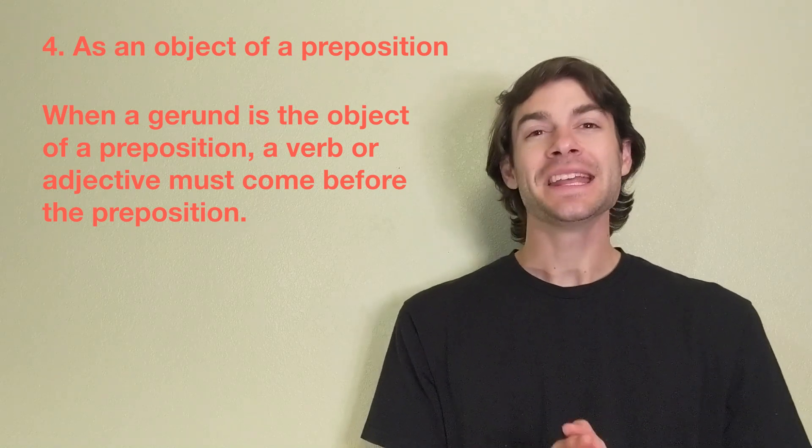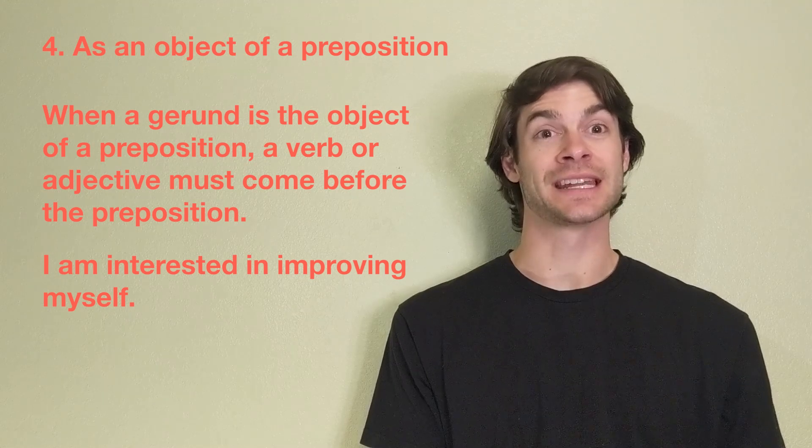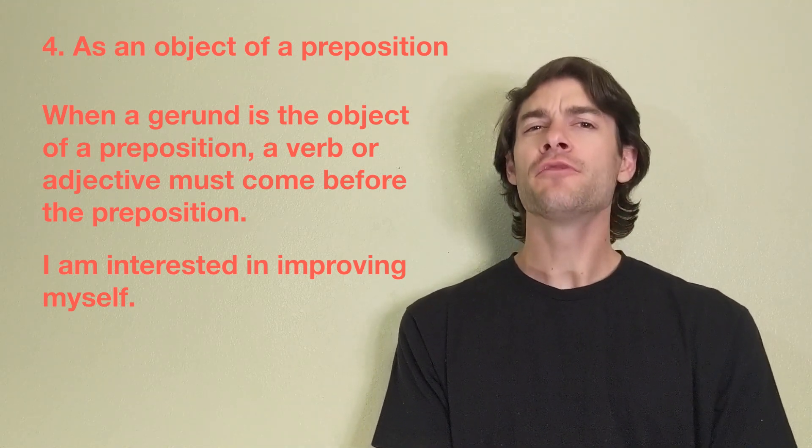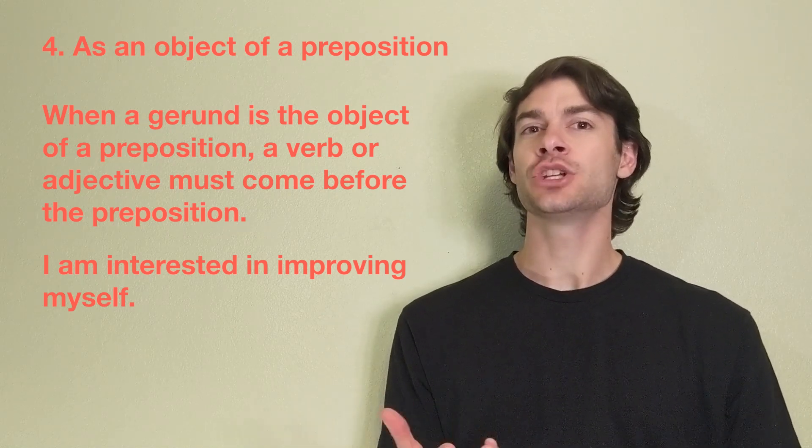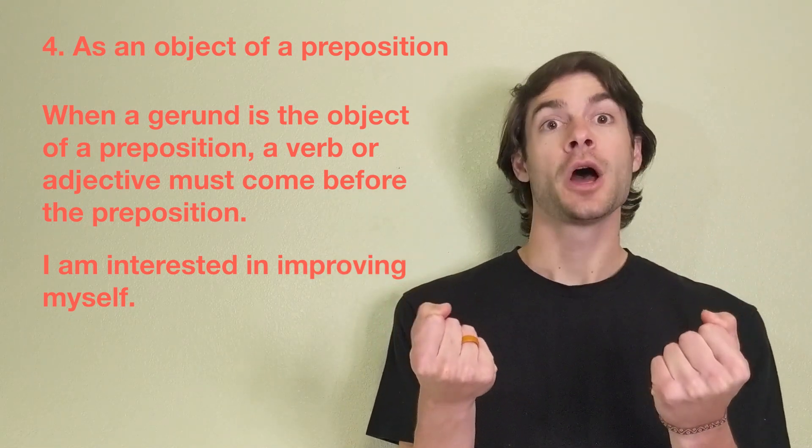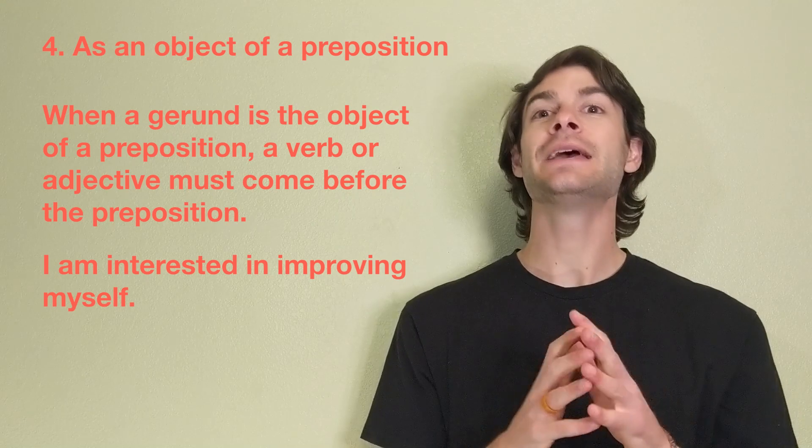For example, in the sentence, I am interested in improving myself, the verb and preposition combination, interested in, is followed by the preposition's object, the gerund improving.